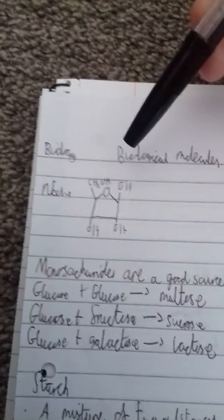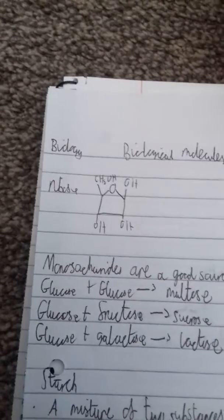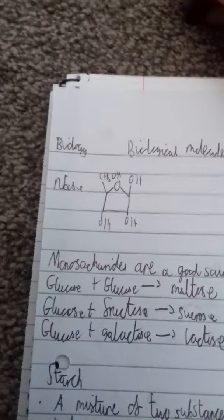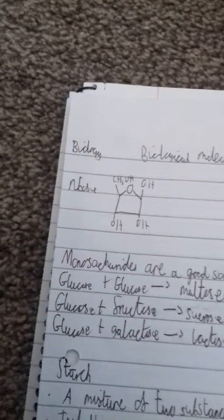Ribose is a pentose sugar. You need to know that the difference between a hexose sugar and a pentose sugar is that a hexose sugar has six carbons, while a pentose sugar has five.